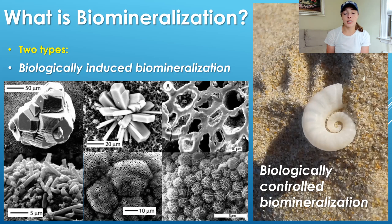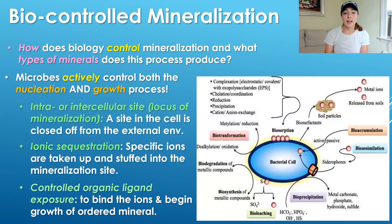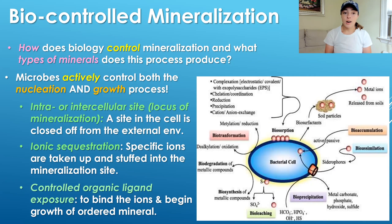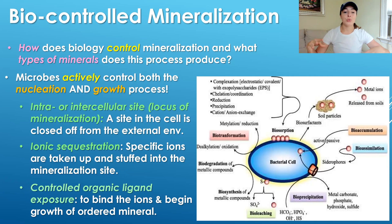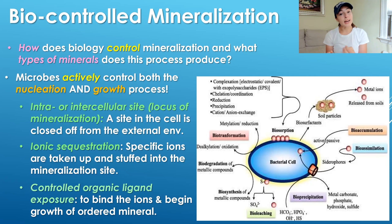There are two main types of biomineralization — induced and controlled — that we introduced in the first video. Controlled just means that the microbe or organism contributing to that process is not only contributing passively, but is actually actively controlling both the nucleation and the growth mechanisms of that process. Typically, this is done by microbes that have an intra- or intracellular site or locus of mineralization where they sequester ions, and then once they concentrate enough ions in that locus, they expose them to certain organic ligands that facilitate nucleation of minerals and then grow those minerals by sequestering more ions.